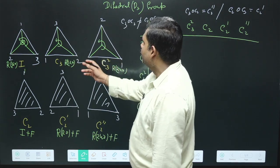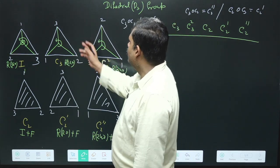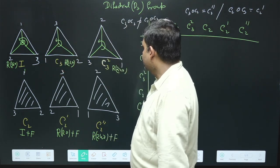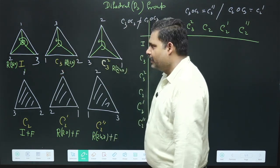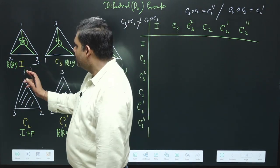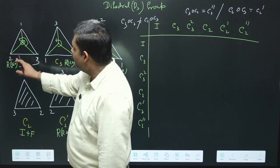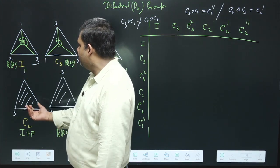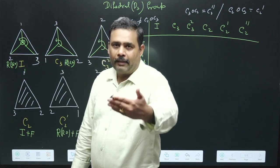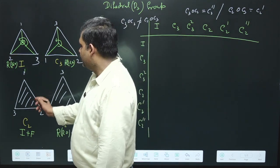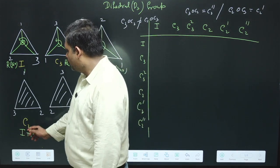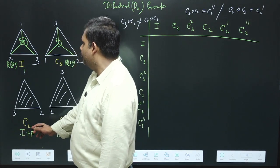For C3², corner 2 goes to one position, corner 3 to another, and corner 1 to the remaining position. Next, we introduce flipping operations. The first flip is a rotation of 360 degrees followed by a flip about a specific axis, represented by a shaded line showing the axis of reflection.